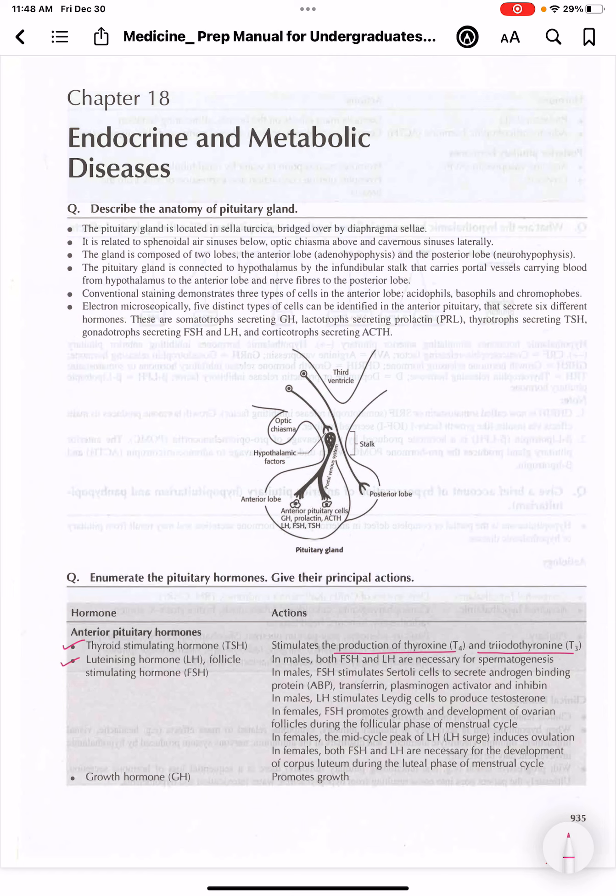Next is luteinizing hormone (LH) and follicle stimulating hormone (FSH). In males, both FSH and LH are responsible for spermatogenesis. FSH stimulates Sertoli cells, which will in return secrete androgen binding protein, transferrin, plasminogen activator, and inhibin. LH will stimulate Leydig cells to produce testosterone.